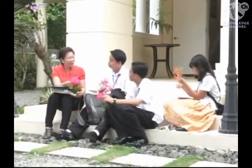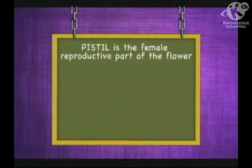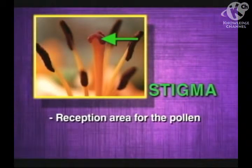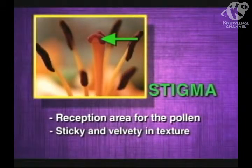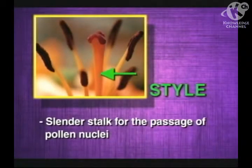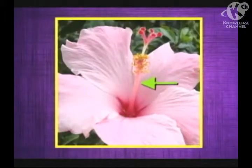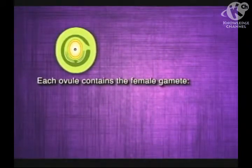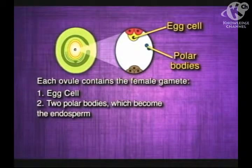Let us now identify the essential parts of the flower. These are the structures directly involved in sexual reproduction. We have the stamen and the pistil. The pistil is the female reproductive part of the flower. It consists of the stigma, style, and the ovary. The stigma is the reception area for the pollen — it is sticky and velvety in texture. The style is the slender stalk for the passage of pollen nuclei. The ovary is the enlarged basal portion that contains the ovule-bearing units called carpels. Its ovule contains the female gamete, the egg, and two polar bodies which become the endosperm.